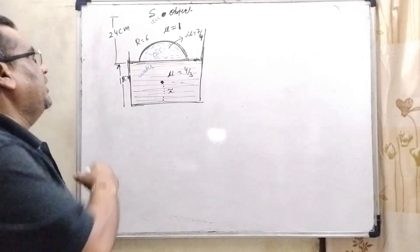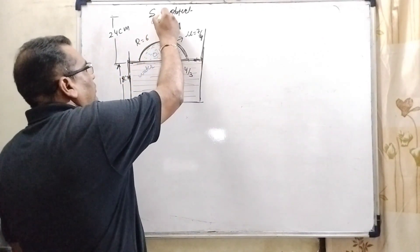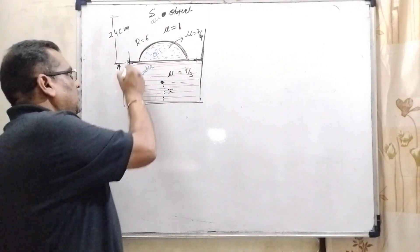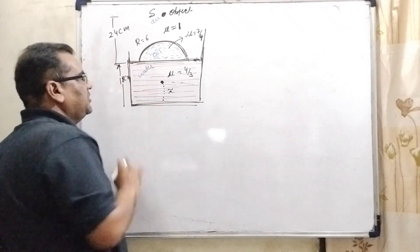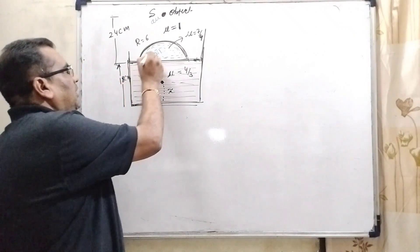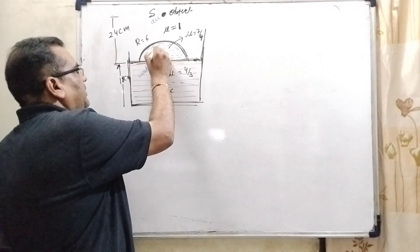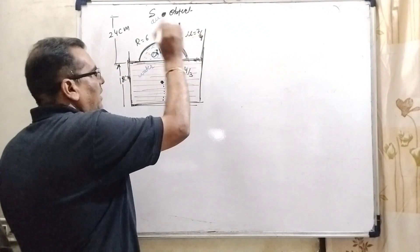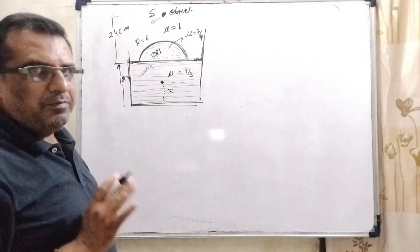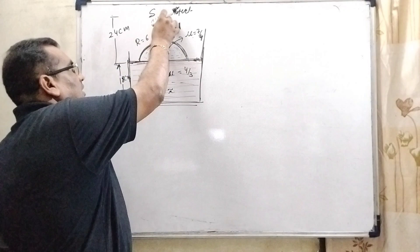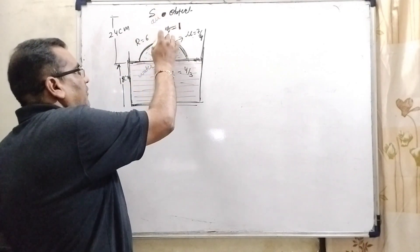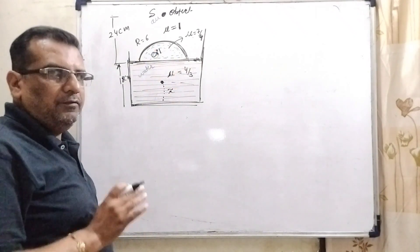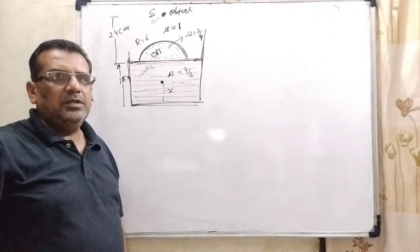In this question, we have given an object which is kept 24 cm above on this water level. And this water filled in tank that is 18 cm height. And here oil drop. Oil drop is lying on this water level. It has a refractive index mu equal to 7 by 4. Now, the key point of this question is that first of all, we have to find the refraction from air to oil and second time oil to water. So we have to find the refraction through curved surface.